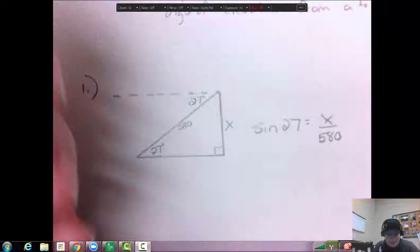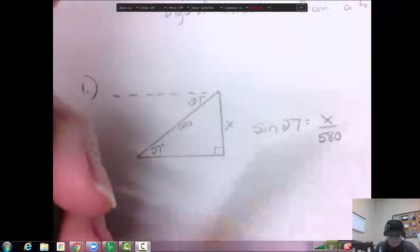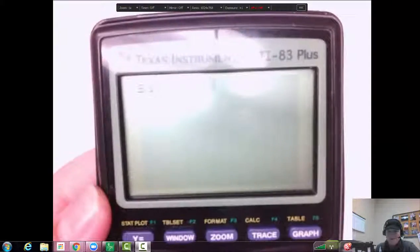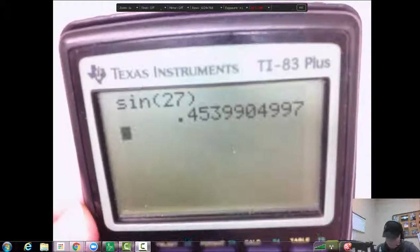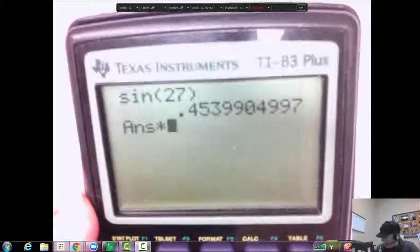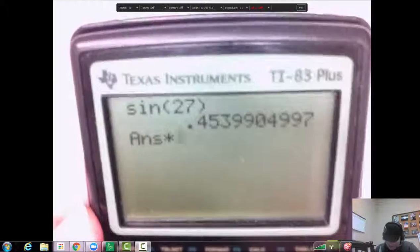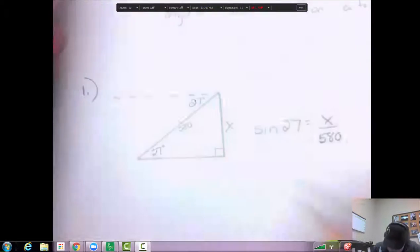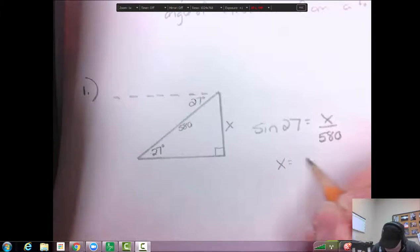So I'm going to find the sine of 27. So sine of 27 and hit enter and I get .4 something. And times that by the number 580 and I get 263. So x is going to equal 263.3.